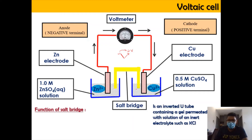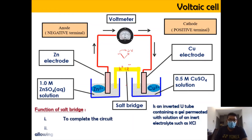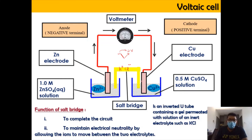The salt bridge is basically an inverted U-tube containing a gel-permeated solution with a salt such as K⁺ and Cl⁻. The function of the salt bridge is first to complete the circuit, and second to maintain electrical neutrality by allowing ions to move between the electrolytes. Without a salt bridge, there would be an excess buildup of charges in both electrolytes and the reaction would stop.